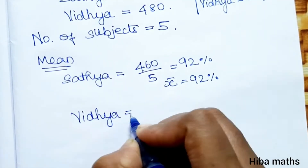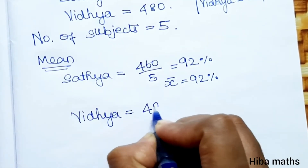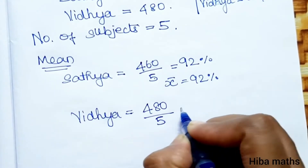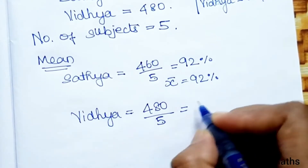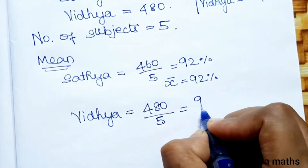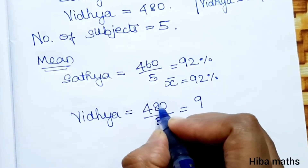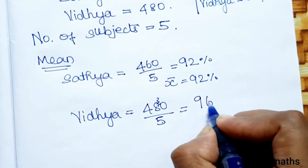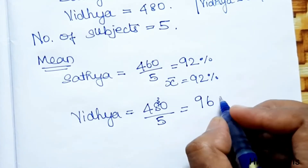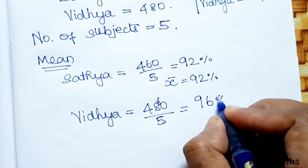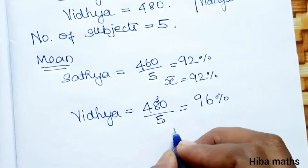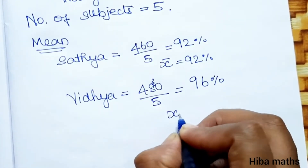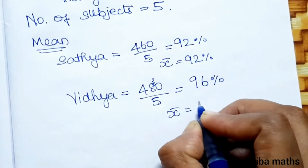Now for Vidya: mean = 480 divided by 5. 5 nines are 45, balance 3; 3 is 30, so 96. The mean value for Vidya is 96.